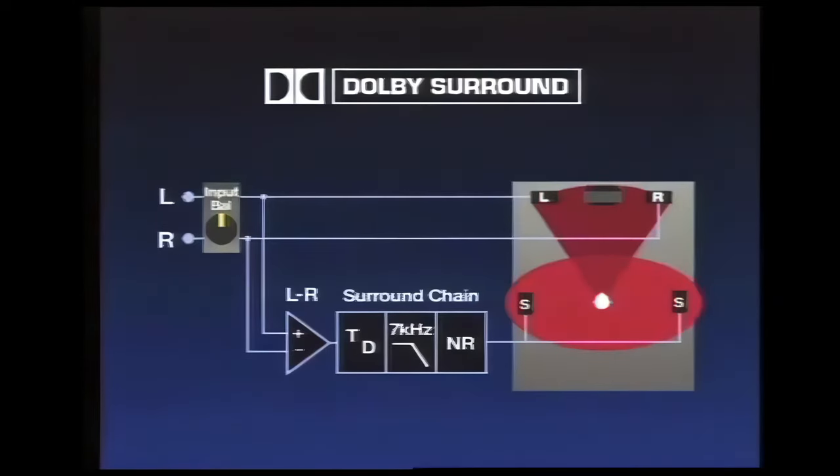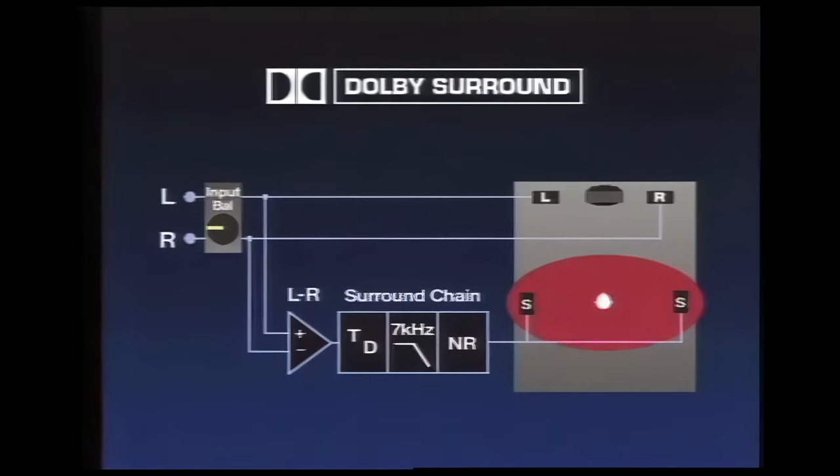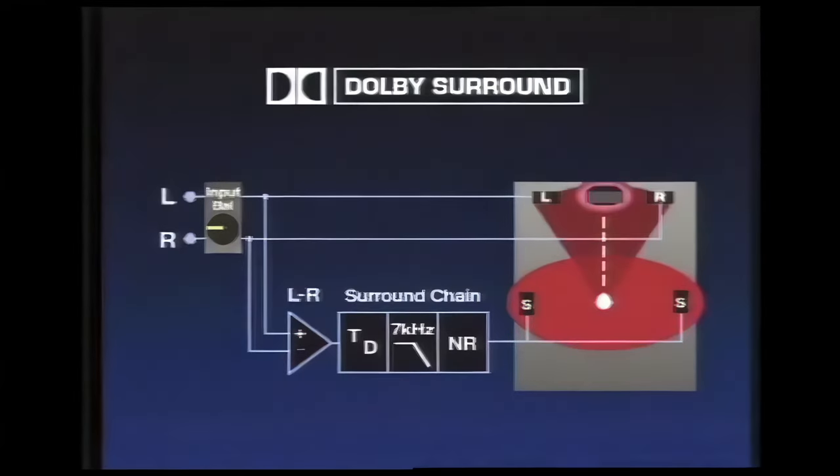On occasion, stereo signals may have balance errors, causing one channel to be louder than the other. Since Dolby Surround decoders look at both inputs to find the surround signal, balance errors could result in improper decoding, causing excessive dialogue leakage from the surround speakers. An input balance control lets you correct for these errors. For decoders without ProLogic, making the adjustment is easiest when the front speakers are turned off. With the program playing, adjust the input balance control until dialogue is at the lowest level in the surround speakers. Then, turn the front speakers back on.